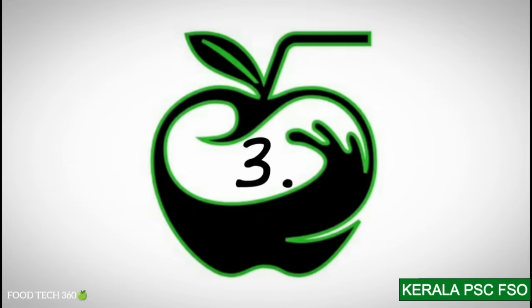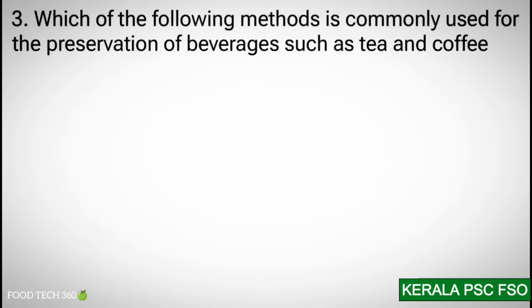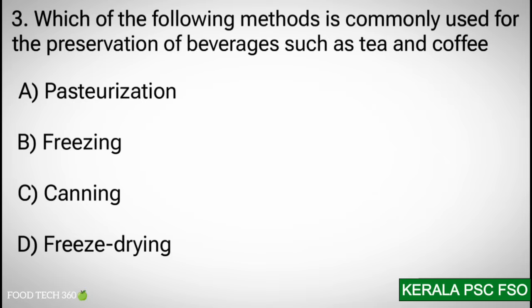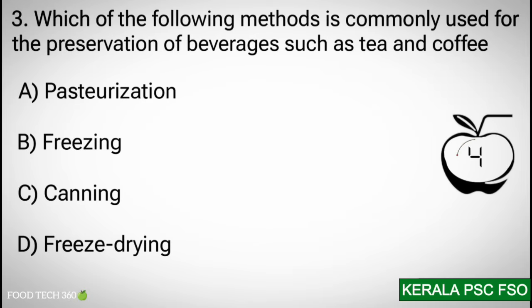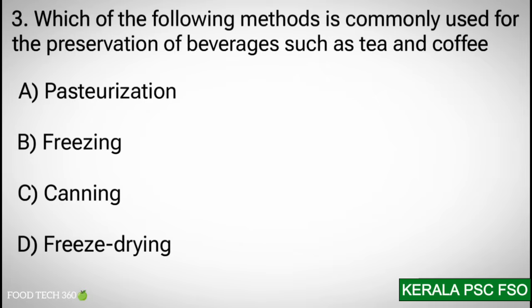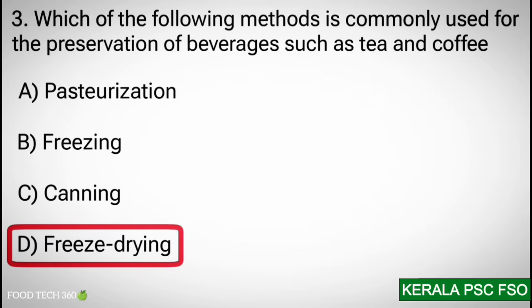Question 3: Which of the following methods is commonly used for the preservation of beverages such as tea and coffee? Options: a) pasteurization, b) freezing, c) canning, d) freeze drying. Correct answer: d) freeze drying.